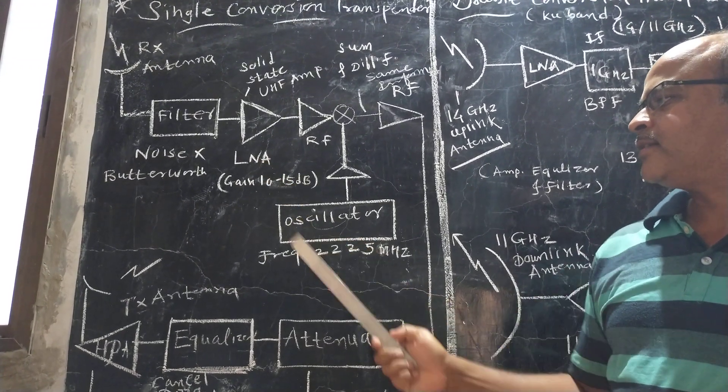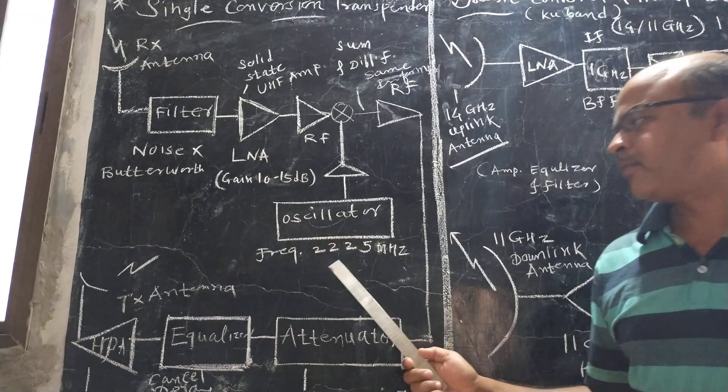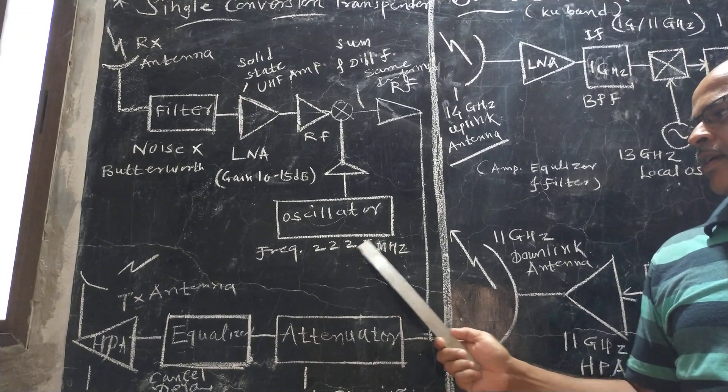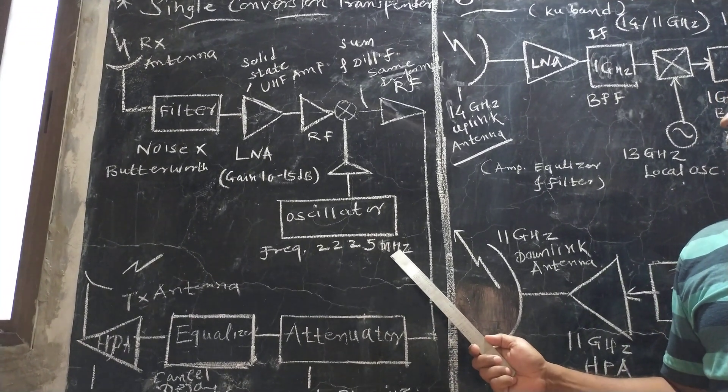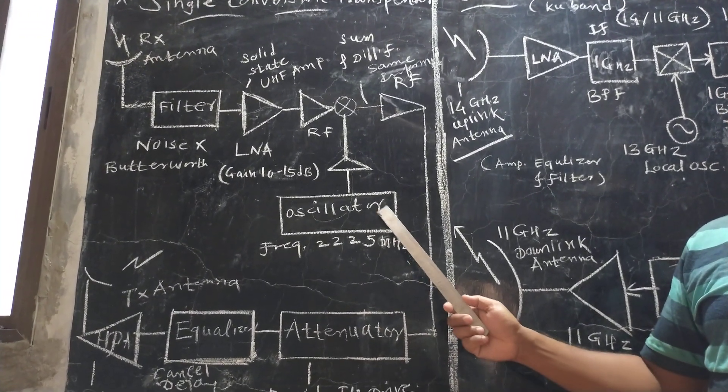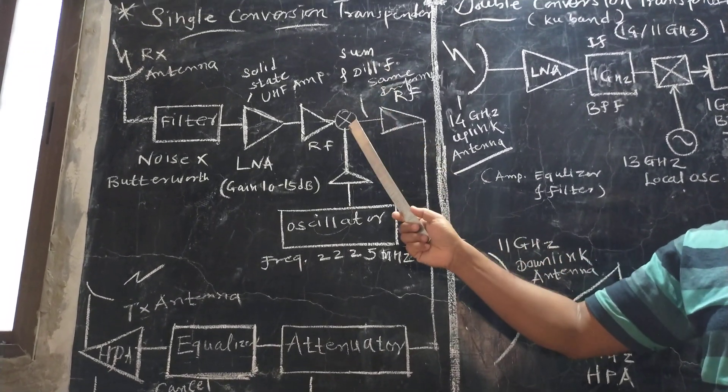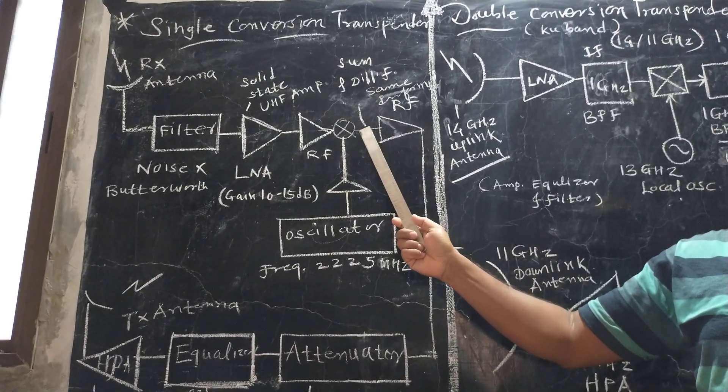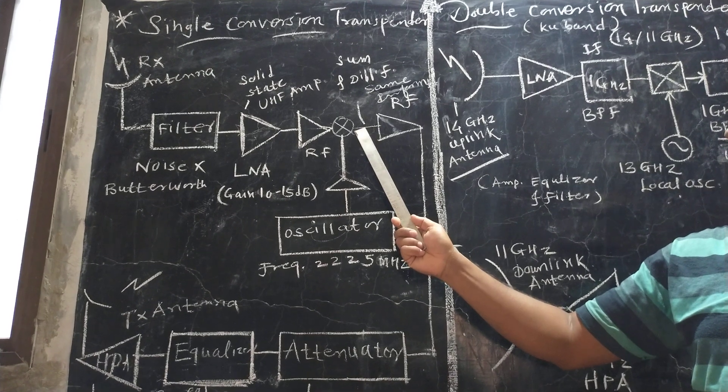The low noise amplifier output is mixed with a local oscillator frequency of 2225 MHz. When mixed, sum and difference frequencies are produced.